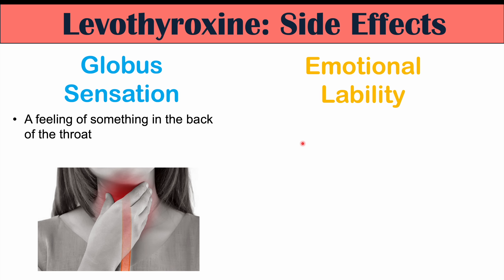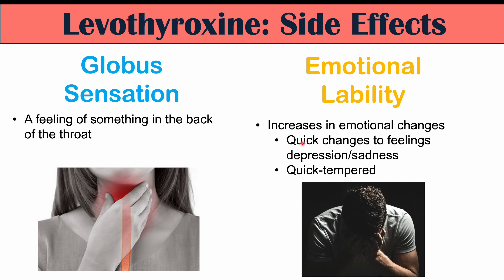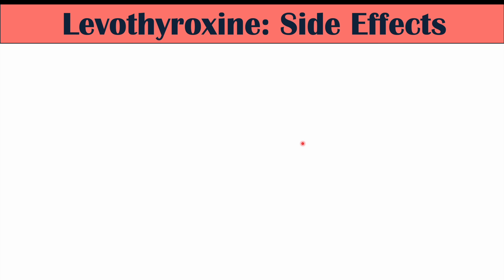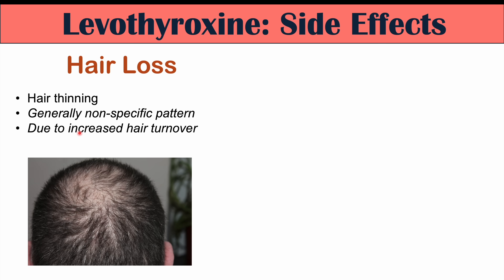Emotional lability — increases in emotional changes — is another potential side effect, with quick shifts in feelings such as happiness, sadness, or being quick-tempered, particularly with too high a dose. Hair loss or thinning can also occur, and in some cases outright alopecia. This can be temporary or longer lasting, generally in a nonspecific pattern rather than a typical male-pattern baldness, and is due to increased hair turnover.